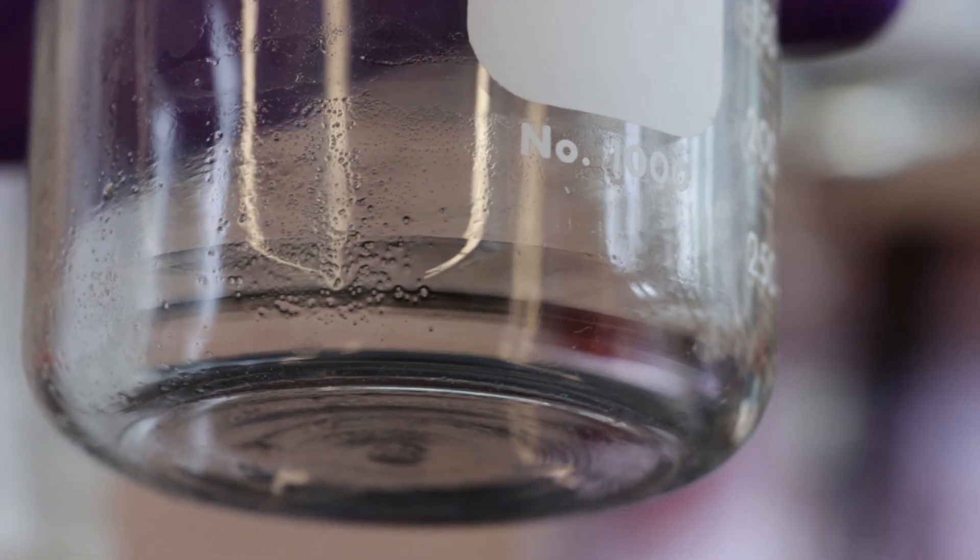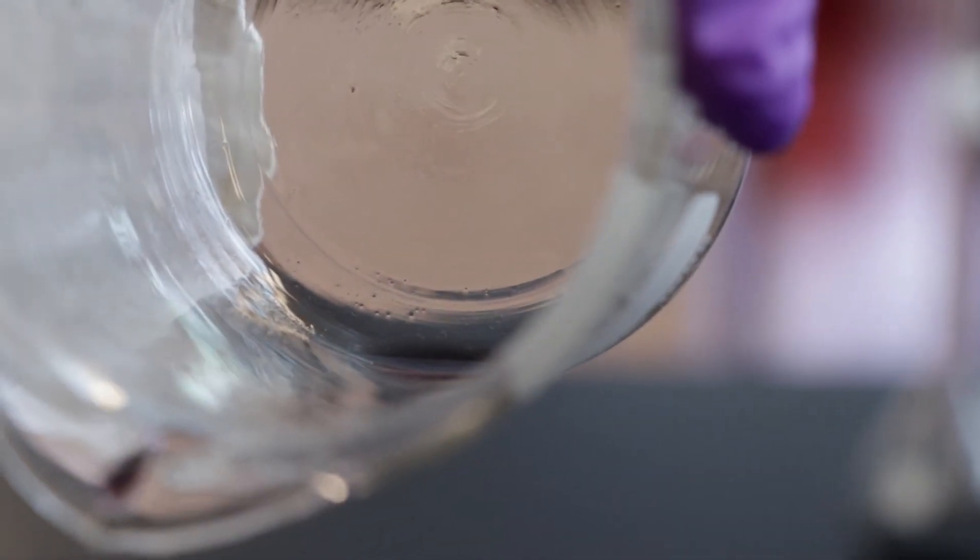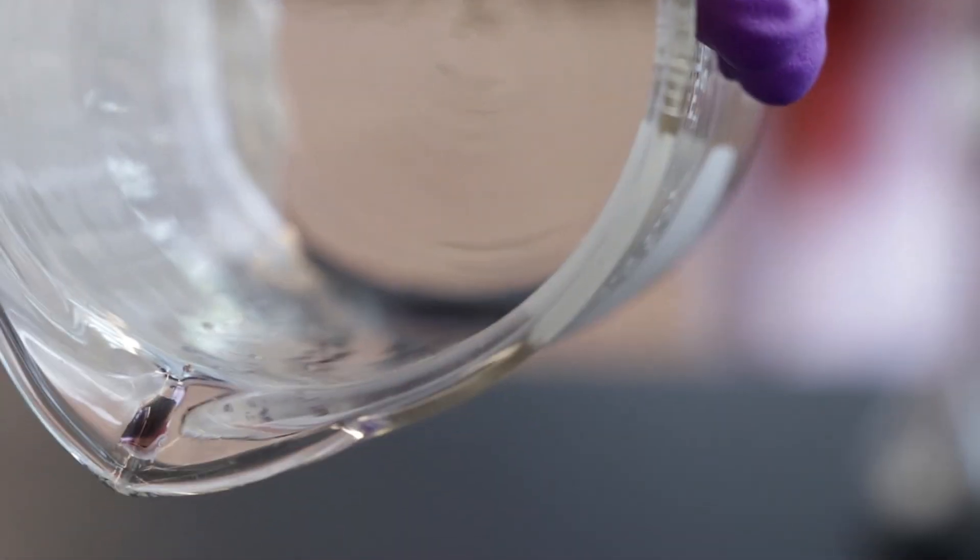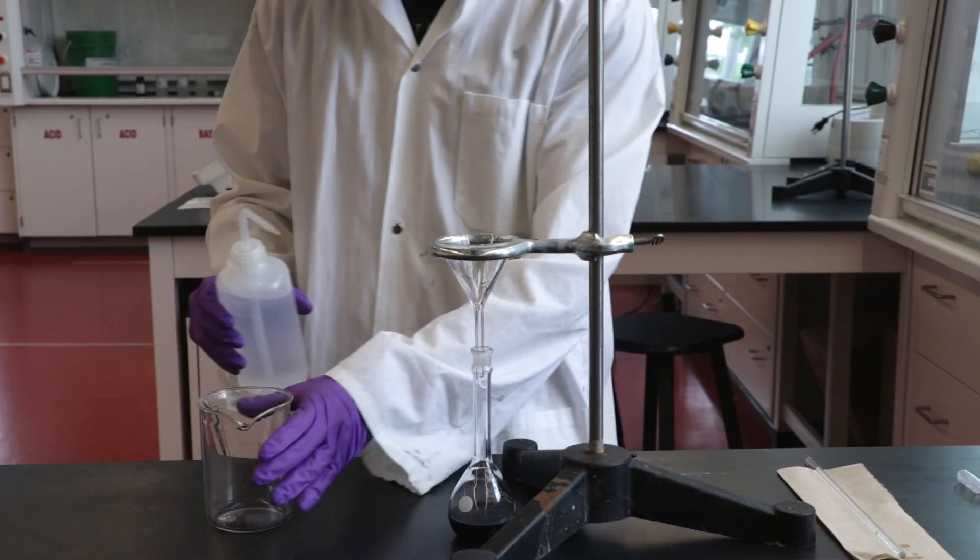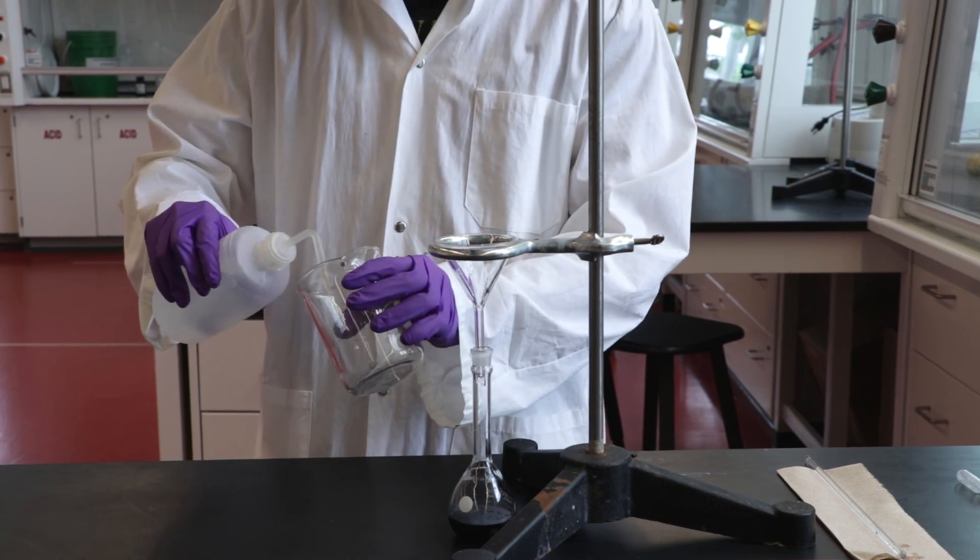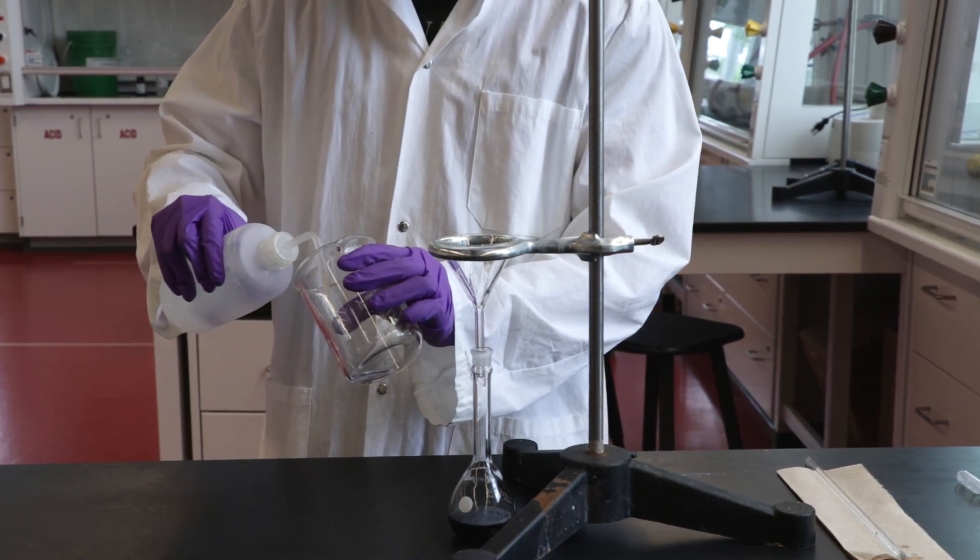Once the beaker is empty you will notice that some residue remains in the beaker. If this is discarded then the solution was not completely transferred. To ensure complete transfer, rinse the beaker with a small amount of fresh solvent and transfer the rinse to the volumetric flask.